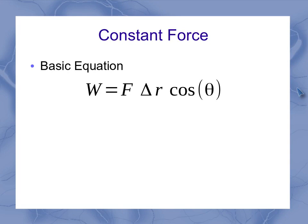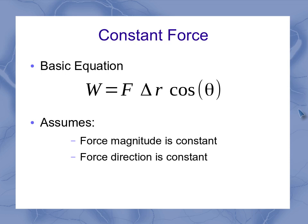Our basic equation for constant force was work is F delta R cosine theta. And it assumes several things: the magnitude of the force is constant, the direction of the force is constant, and the displacement is in a straight line.